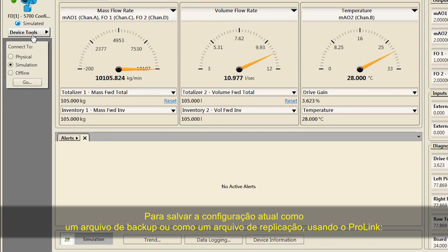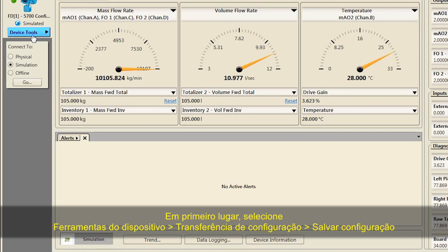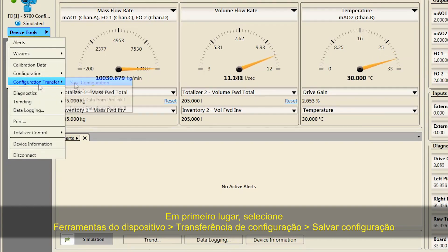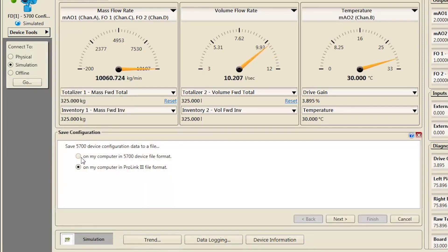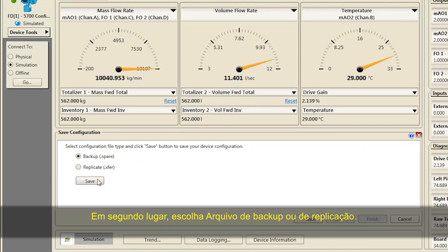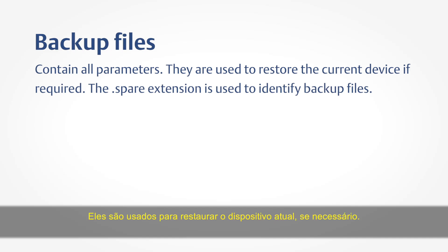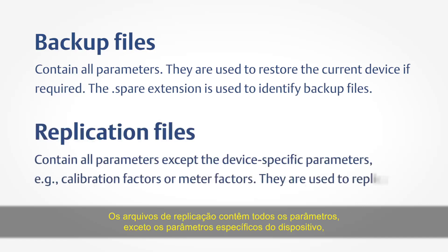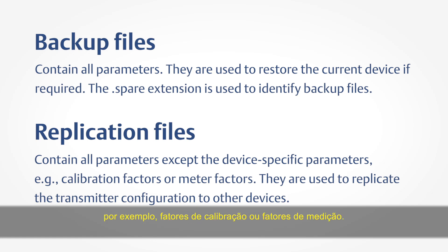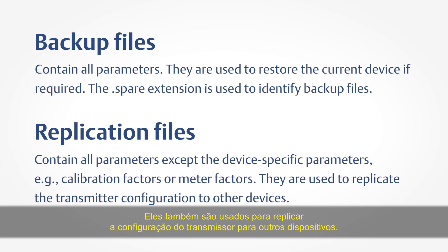To save the current configuration as either a backup file or a replication file using ProLink: first, select Device Tools, Configuration Transfer, Save Configuration. Second, choose Backup or Replicate File. Backup files contain all parameters and are used to restore the current device if required; the .spare extension is used to identify backup files. Replication files contain all parameters except device-specific parameters, such as calibration factors or meter factors, and are used to replicate the transmitter configuration to other devices.